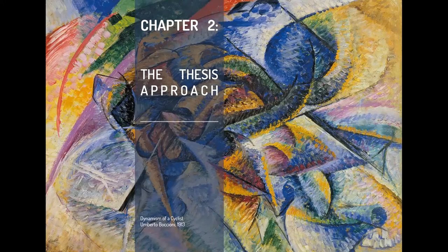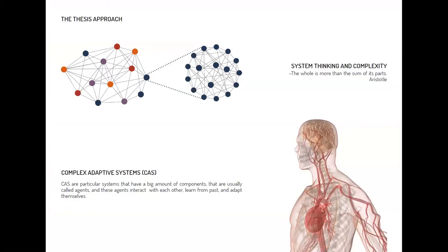In chapter 2, I briefly describe the general approach, which is based on complexity. Complexity studies systems, and a complex system is comprised of many other systems. A complex adaptive system is a specific type whose components learn from the past and are able to adapt themselves. The human body is a perfect example. So basically in my thesis, I used a methodology which evaluates the city as a complex adaptive system.